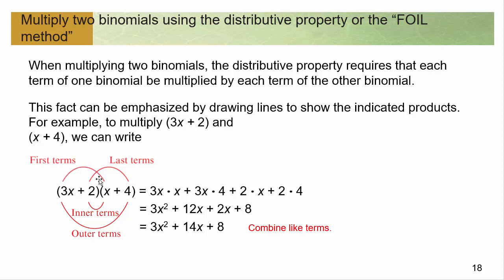First terms: this thing times this — you can see those are both first terms. Then you do outside — this one times the outside. Then you do the inner. Then you do the last. So F-O-I-L, FOIL. But what did we really do? We literally just did what we've been doing with all these examples — we just did normal distributing. We distributed one thing through and then distributed the next.